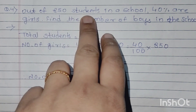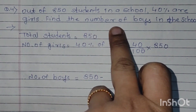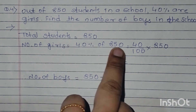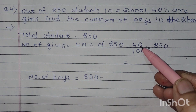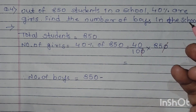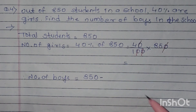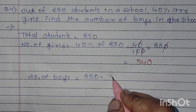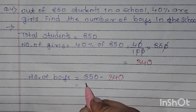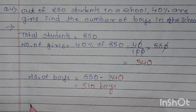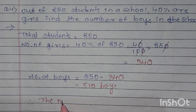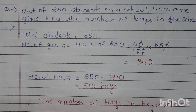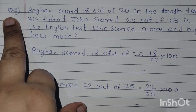Question 4: out of 850 students in a school, 40% are girls — find the number of boys in the school. Total students 850, number of girls 40% दिया है number नहीं दिया है, तो पहले number में convert करना पड़ेगा: 40 upon 100 into 850. Zeros get cancelled और यह 0 भी cancel हो जाएगा: 85 into 4 is 340 — मतलब 340 girls हैं। Number of boys: 850 minus 340 is 510 boys. Therefore the number of boys in the school are 510.